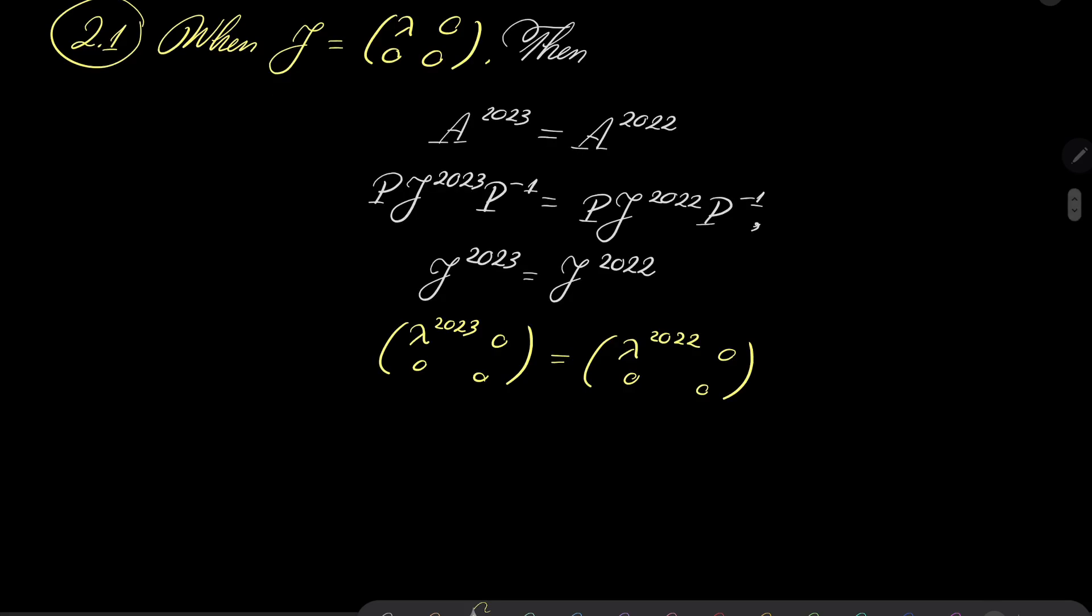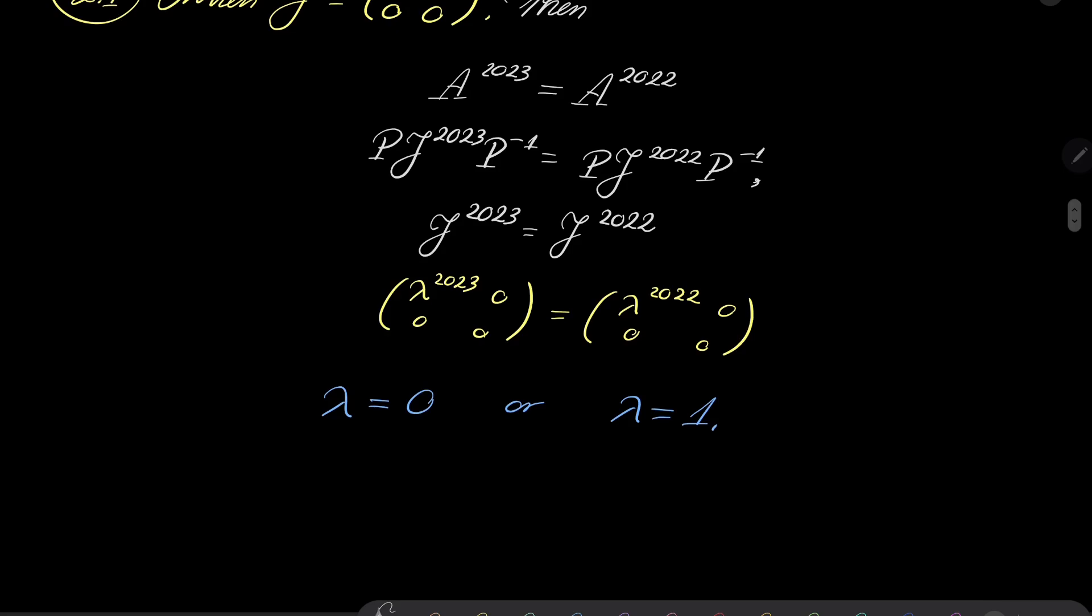And now by comparing these two matrices, we have two cases. Either lambda equals zero. So this is for certain a solution. Or if lambda is not zero, we can divide these entries by lambda to the power of 2022. And we get lambda equals 1. Let's consider these two cases separately.